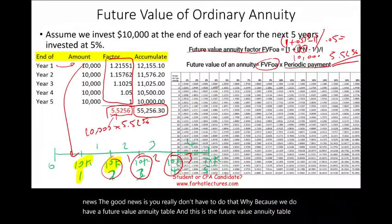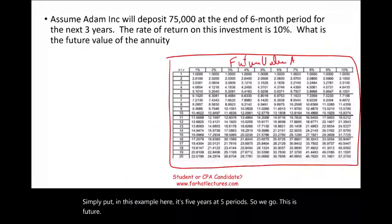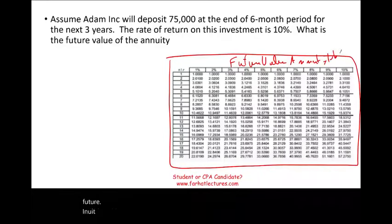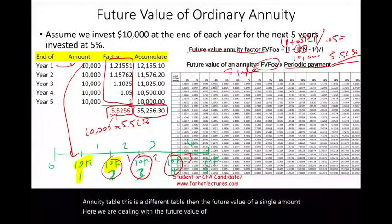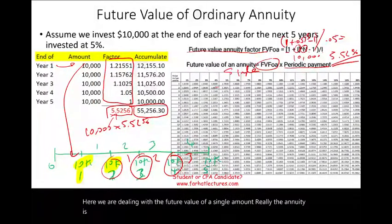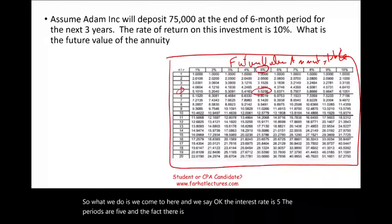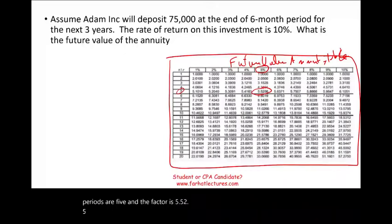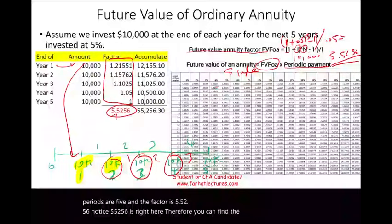Simply put, in this example it's 5 periods at 5%. This is the future value annuity table — a different table than the future value of a single amount. The annuity is really multiple single amounts, but since they're all the same, we have a table for that. We look at interest rate 5%, periods 5, and the factor is 5.5256. Using the table, you can find the future value of an annuity.